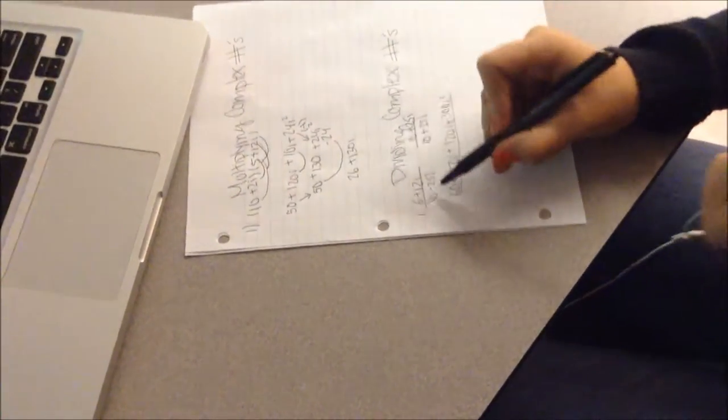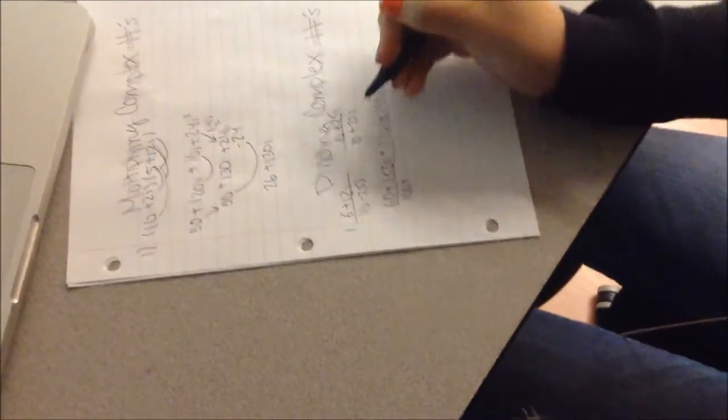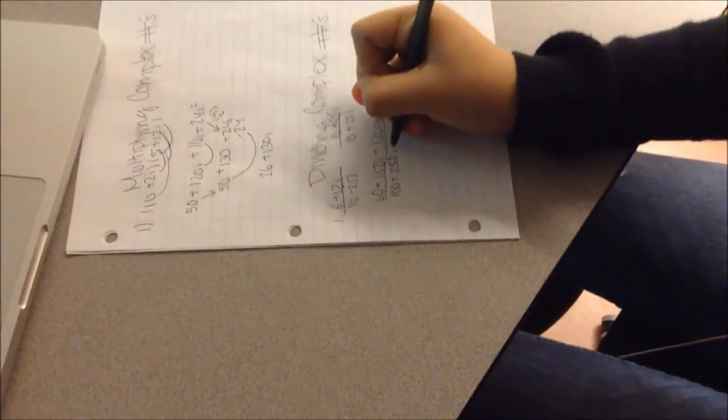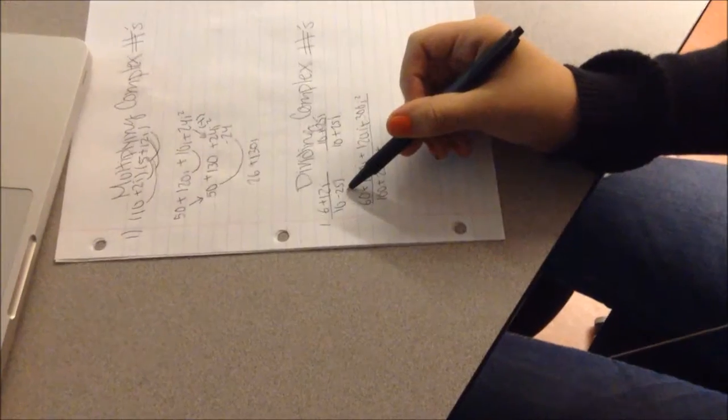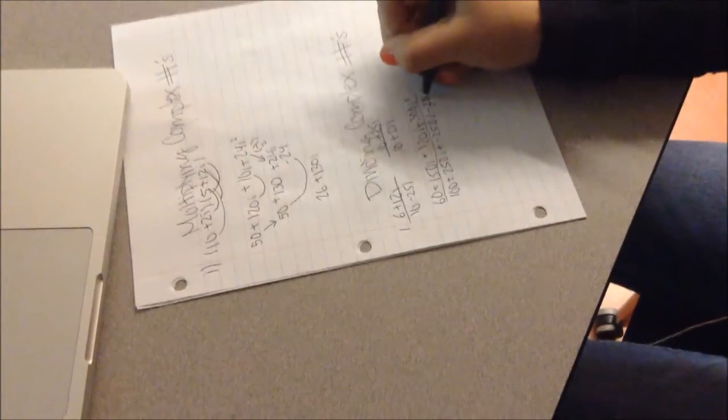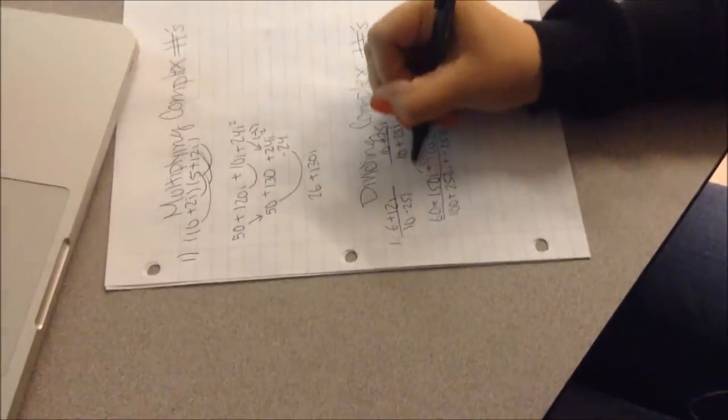So the denominator in FOIL method. 10 times 10 is 100. 10 times 25i is 250i. Plus negative 25i times 10 would be negative 250i. And then negative 25i times positive 25i would be negative 625i squared. So now after you get both of these, you'll want to do what's called combine like terms.